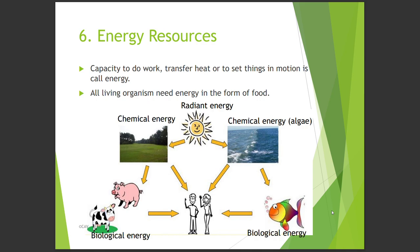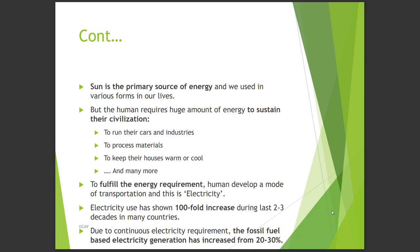The radiant energy of the sun is converted to chemical energy through photosynthesis by green plants. When we eat green plants or herbivores — consumers who eat green plants — we get that energy. The same happens in aquatic ecosystems through algae. However, humans require a huge amount of energy to sustain their civilization — to run cars, process materials, and keep houses warm or cool.